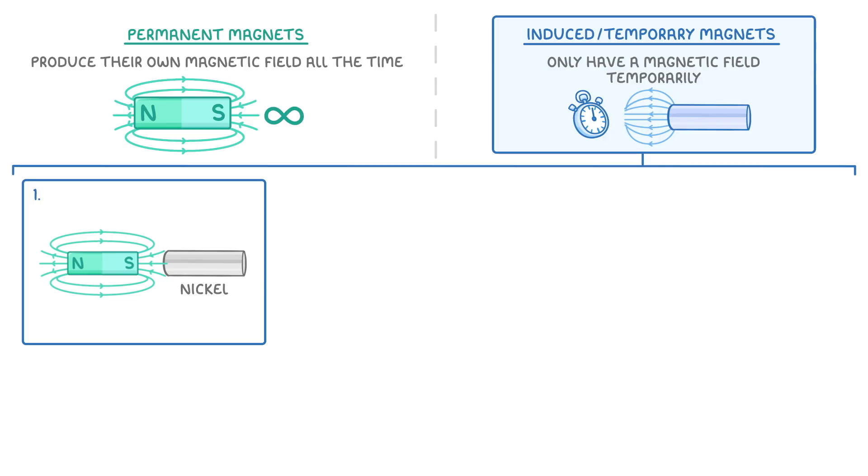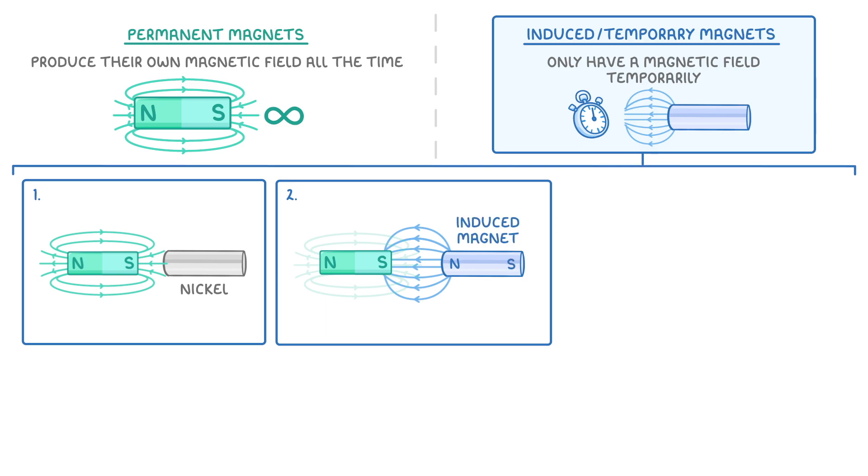This induces the piece of magnetic material to develop its own magnetic field with its own north and south pole, and thus we call it an induced magnet.